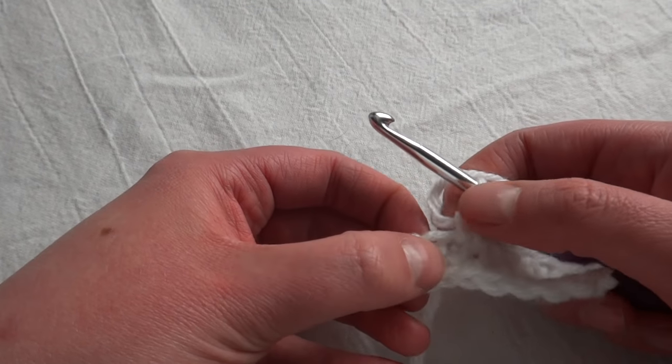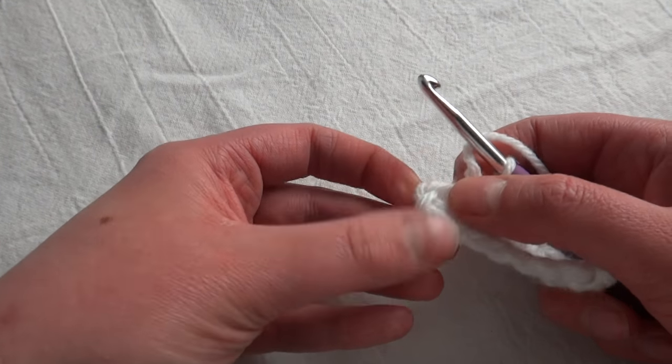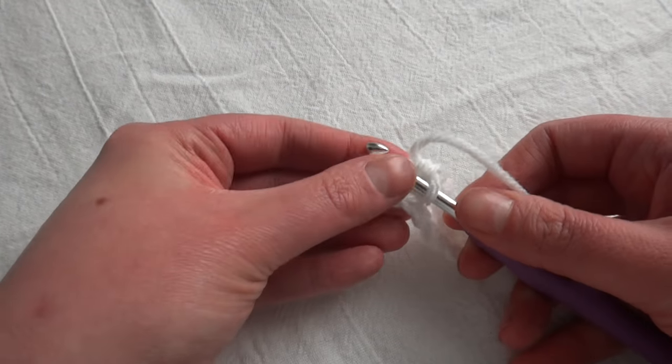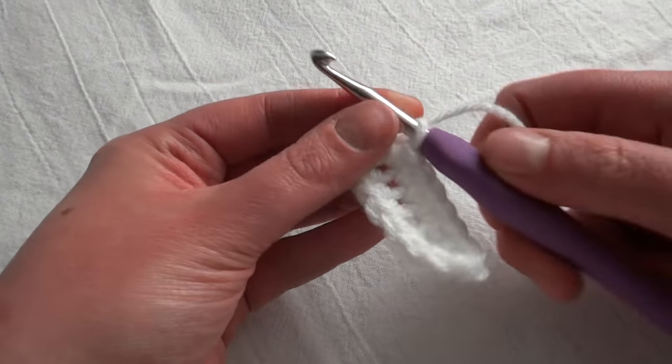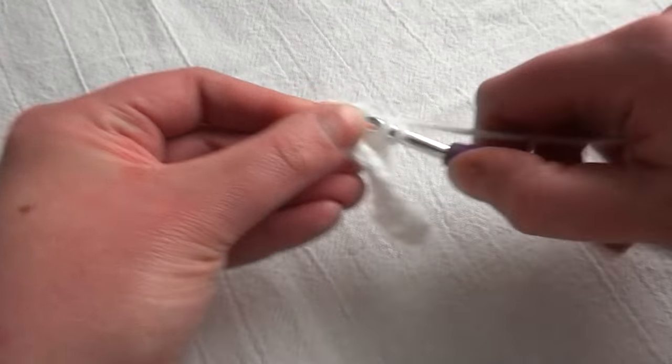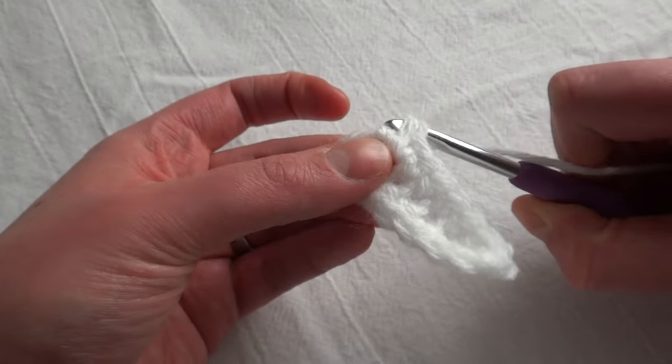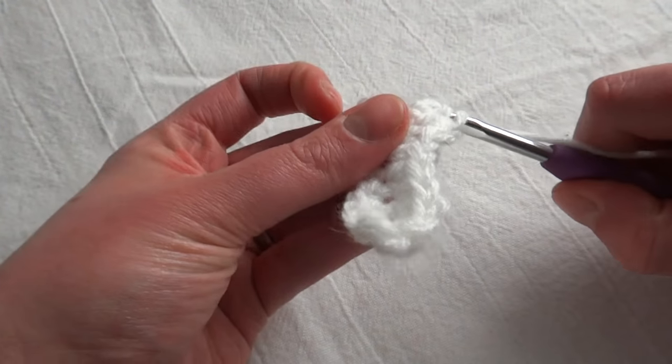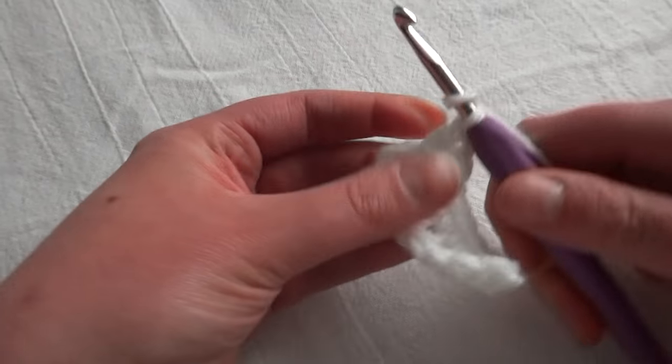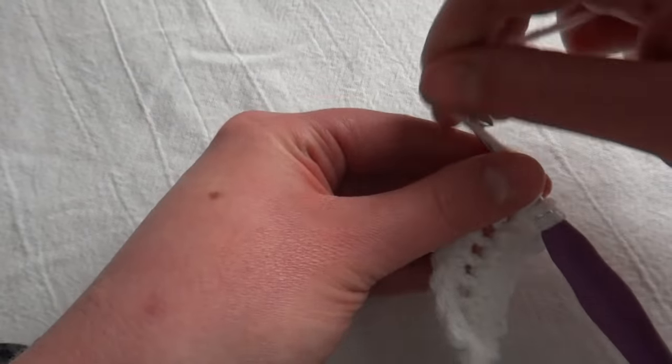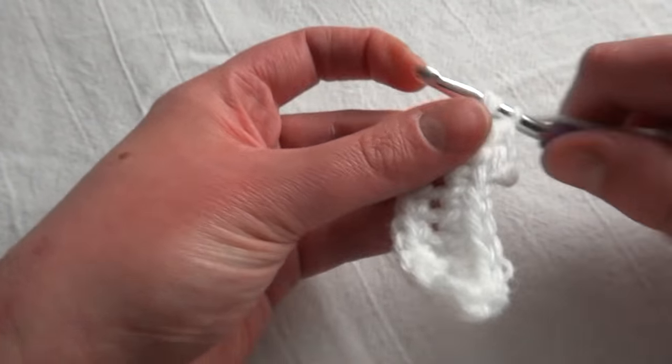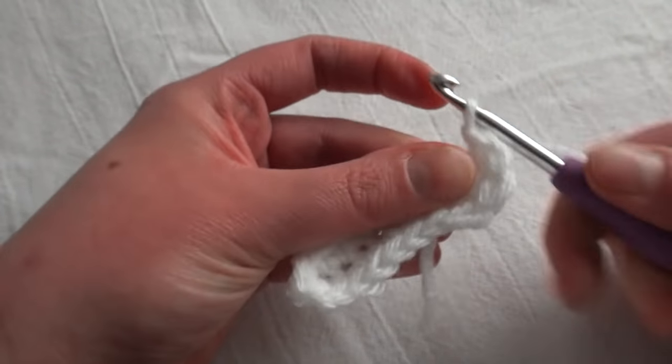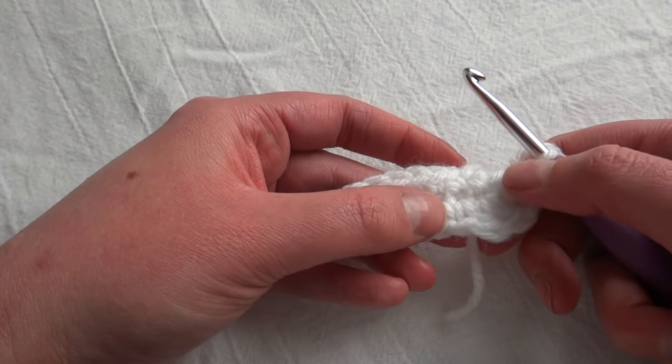And then in the last space, which is where you should have your chain two and your double crochet coming off of, we are going to double crochet four. And you'll want to yarn over first. All right, so you might be able to see it, but this will be the very first little cloud puffy. I honestly don't know what they're called.